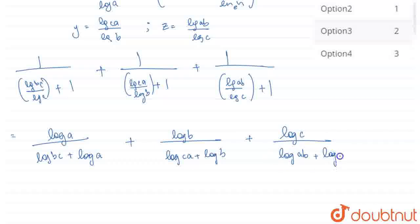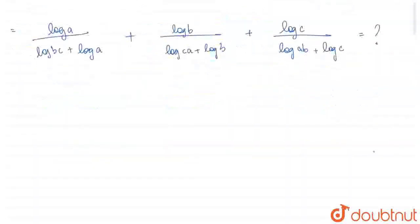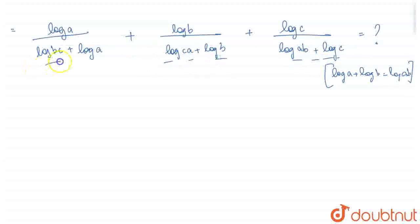This is equal to what we need to find. Now see, there's a log property: log a plus log b is equal to log ab. You know this property.